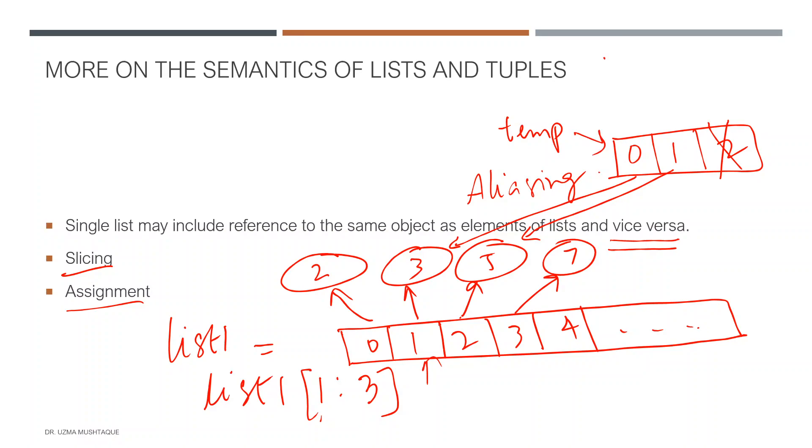Similarly, if I do an assignment to temp at position zero—let's say temp[0] is not three anymore but 15—now this will reference 15 somewhere else. This is how slicing and assignment actually happens. This is the whole idea behind referential lists.